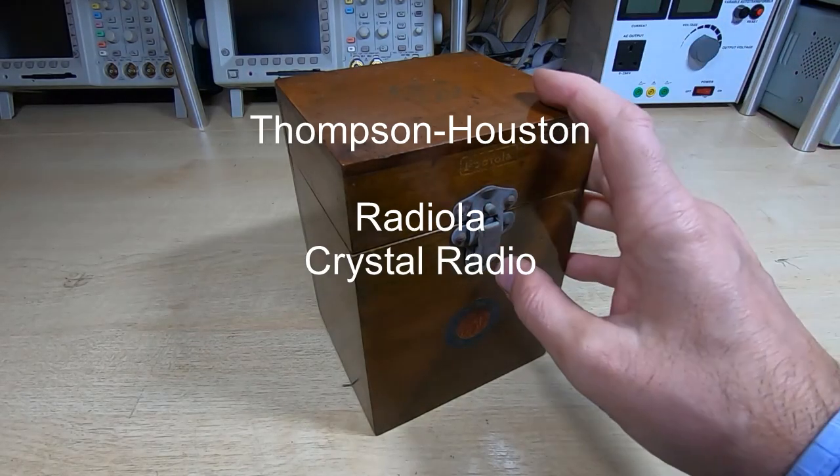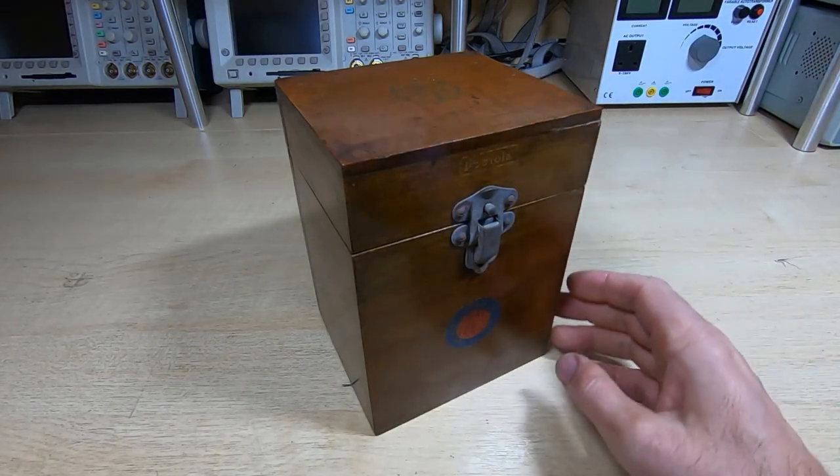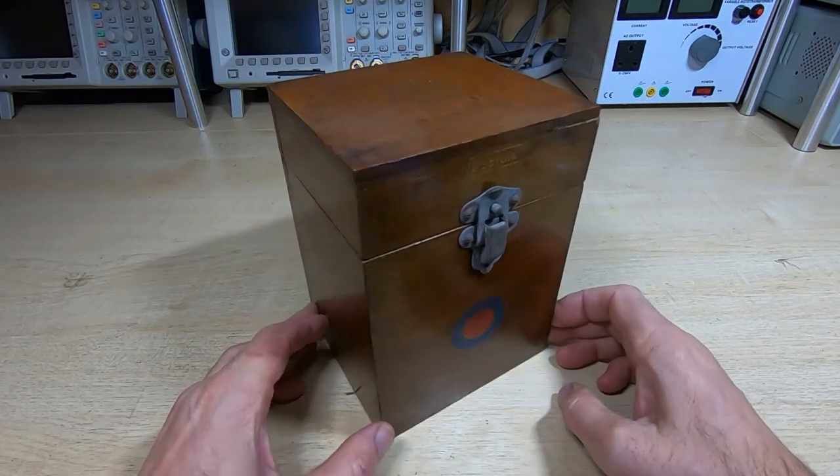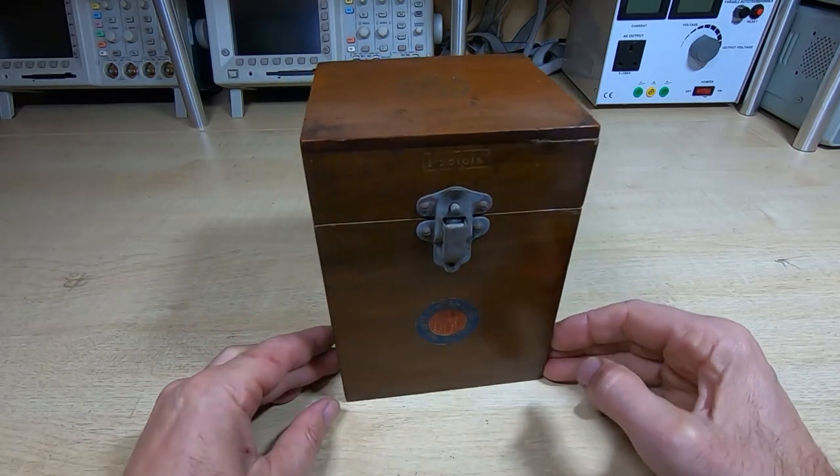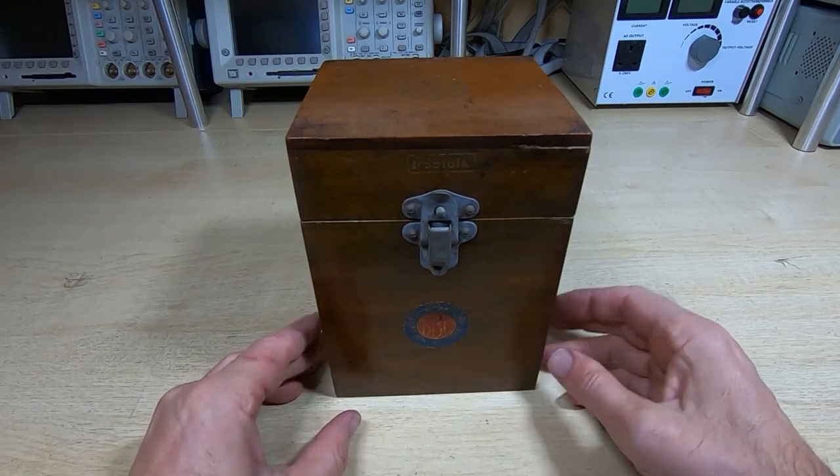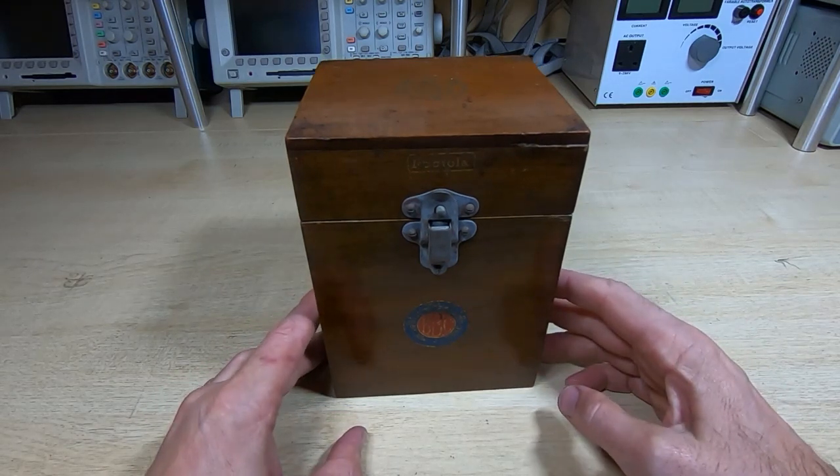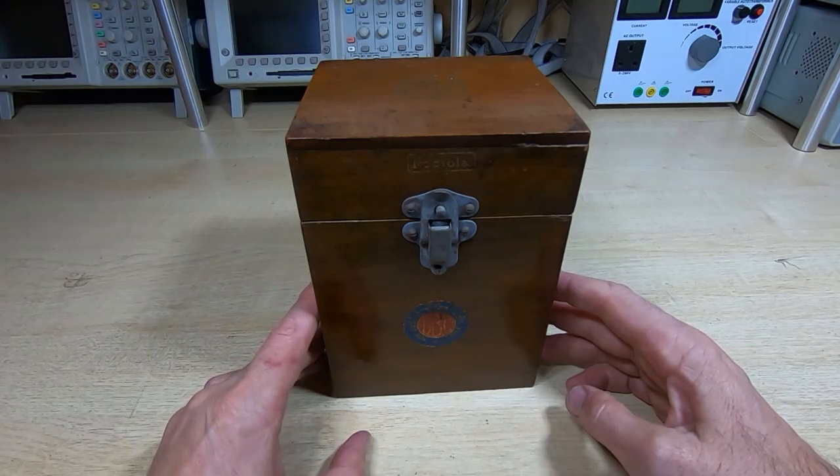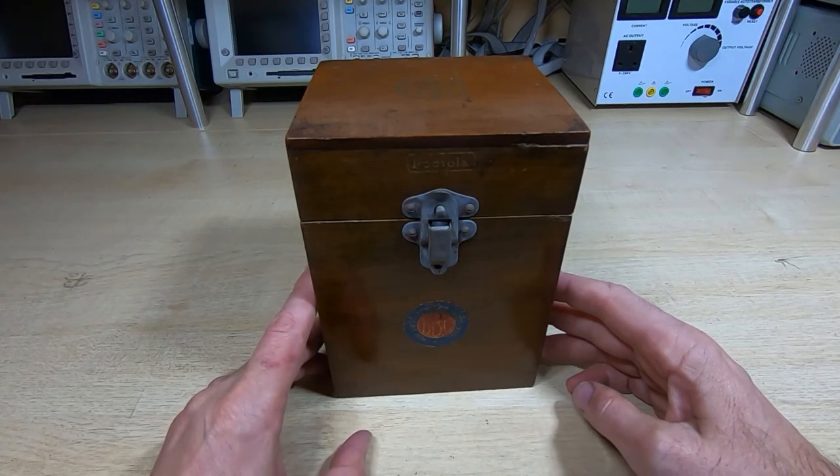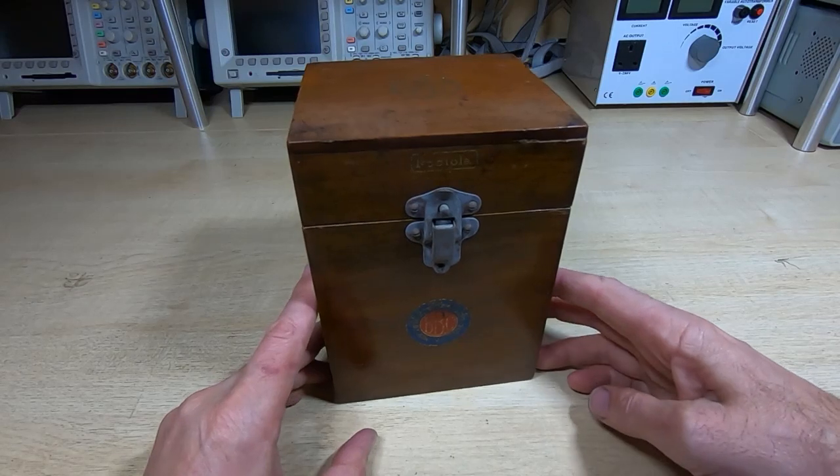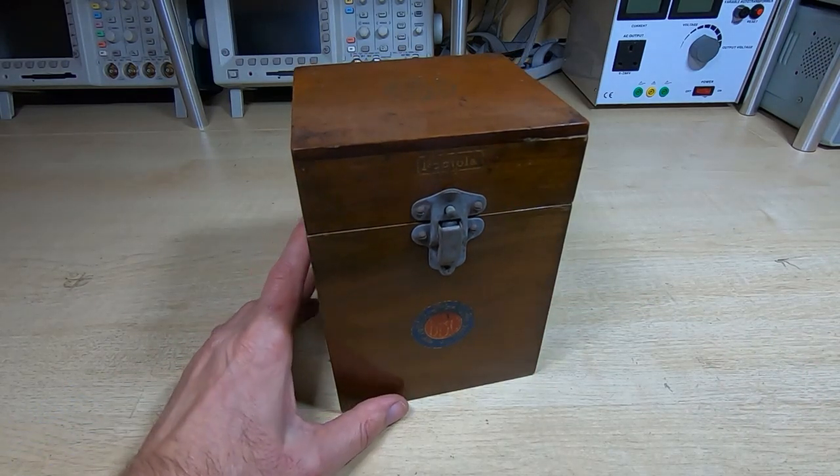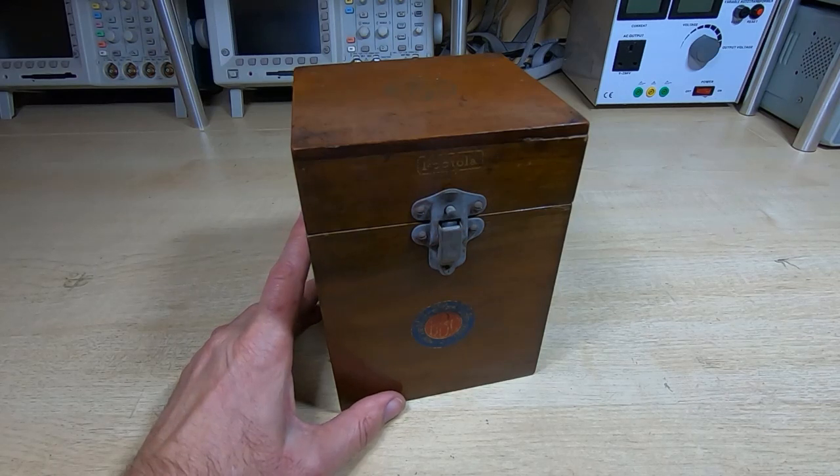In this video we're going to take a brief look at this crystal radio. This is almost exactly 100 years old, these were manufactured back in the early to mid-1920s. This particular one dates back to around 1923 and it is a British Thompson and Houston Type C crystal receiver.